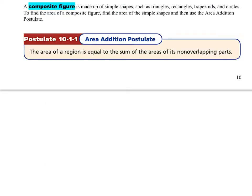A composite figure is a figure that's made up of other shapes — it can be triangles, rectangles, circles, half-circles, whatever. In order to find the area of a composite figure, we're going to use the area addition postulate, which says the area of a region is equal to the sum of the areas of its non-overlapping parts. So if we were trying to find the area of this composite figure, we would find the area of the square, find the area of the triangle, and add them together to get the total area.